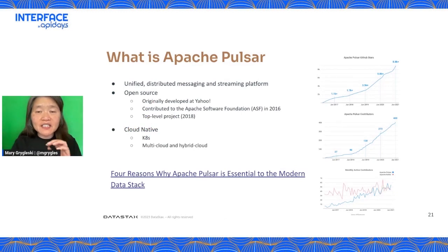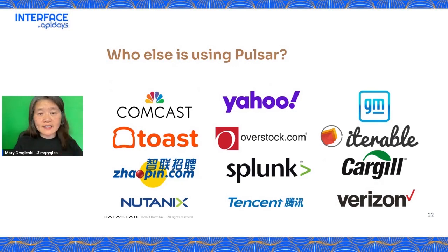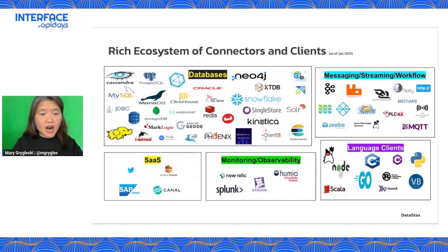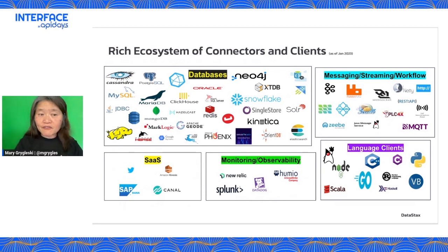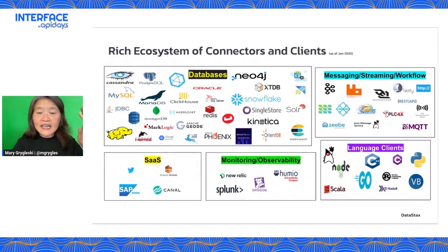Pulsar has a growing number of GitHub stars and contributors. Users include Yahoo Japan — which DataStax works with — and Verizon, among other major vendors. Pulsar connectors offer great flexibility: it works with many databases including Cassandra, MariaDB, Oracle, and Postgres; messaging systems like Kafka; language client API bindings for all major languages; monitoring tools like Splunk and Datadog; and SaaS services like Apache Kinesis.